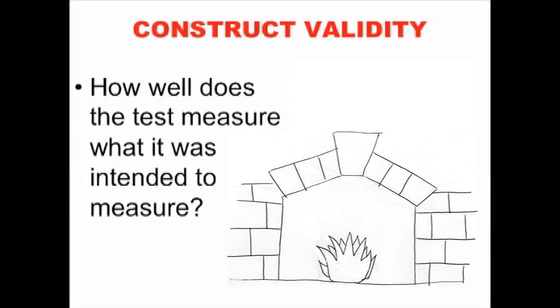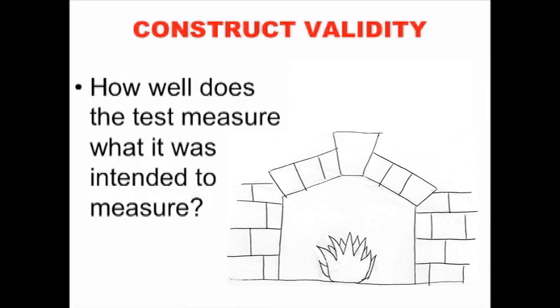One of the most important features of validity is construct validity — how well does the test measure what it was meant to measure? Going back to the cricket example, her test was not measuring the cricket's ability to hear; it was measuring how hard it is to jump when you don't have legs. Construct validity is the keystone of normal test development. Like the keystone — that triangle-shaped stone that holds an arch up — construct validity holds the entire construct of assessment up. If there's no keystone, it all falls apart.